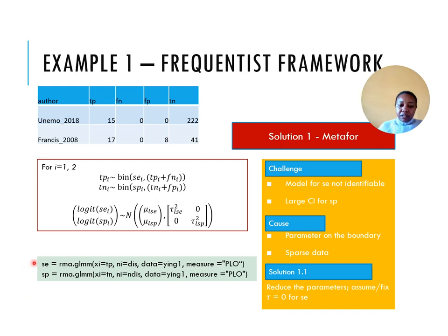The model for sensitivity was not identifiable because the parameter is on the border. If we go back to the studies here, both studies have 1. If you were to estimate the sensitivity is 1 in both studies, so it would be safe to assume there is no between study heterogeneity.